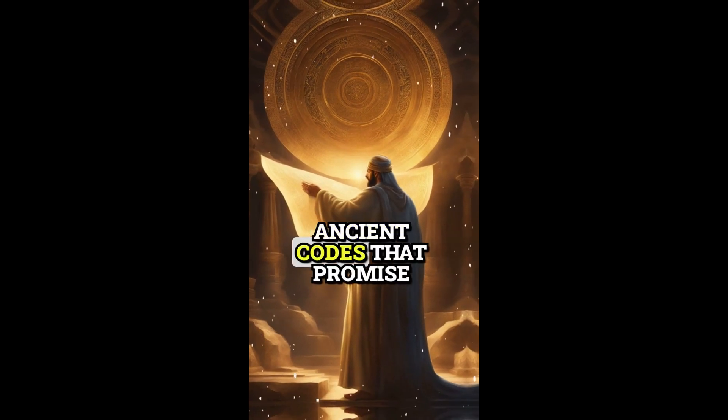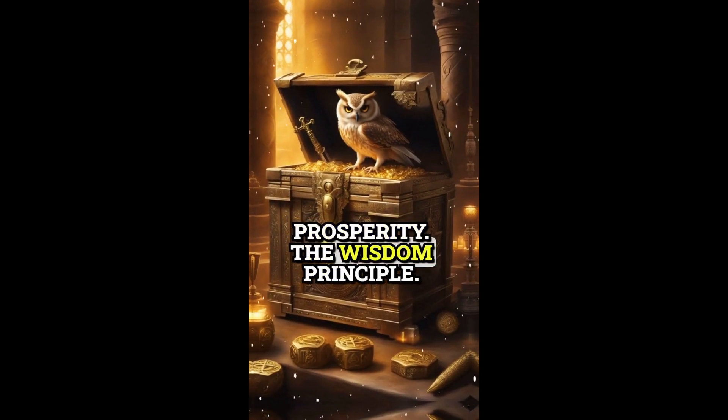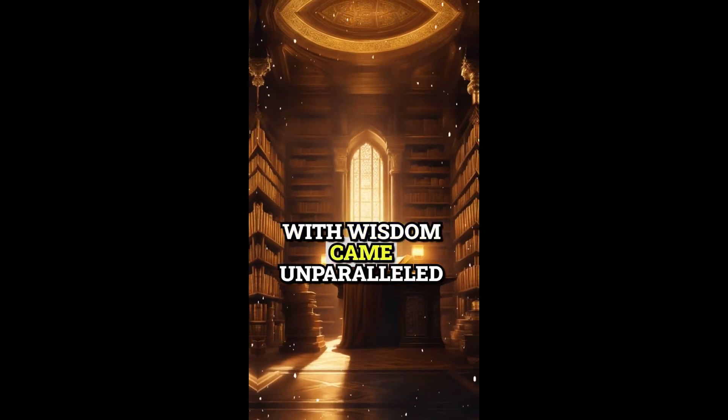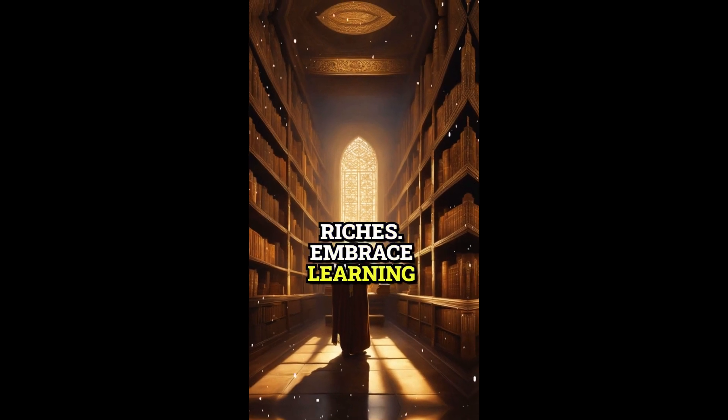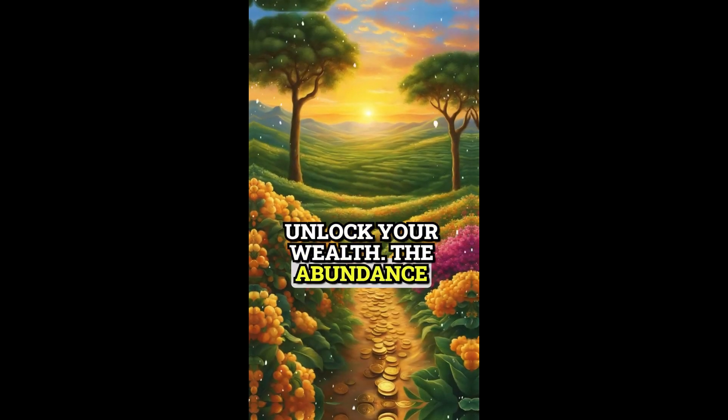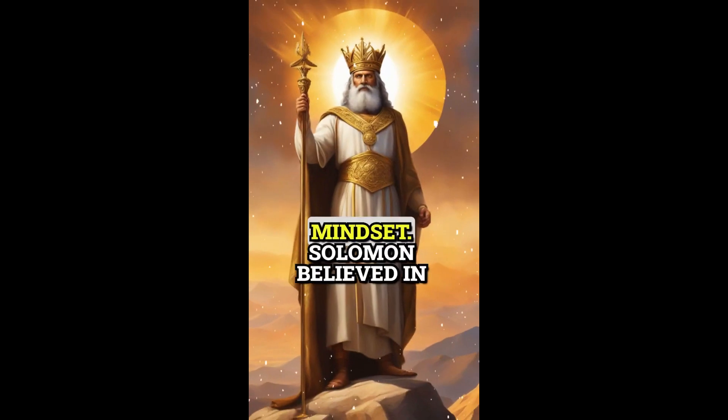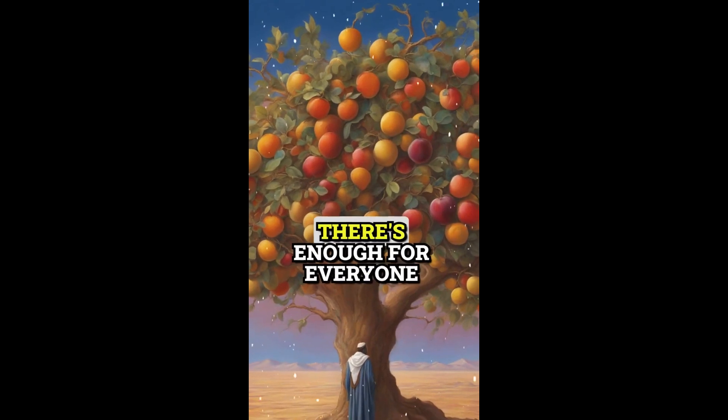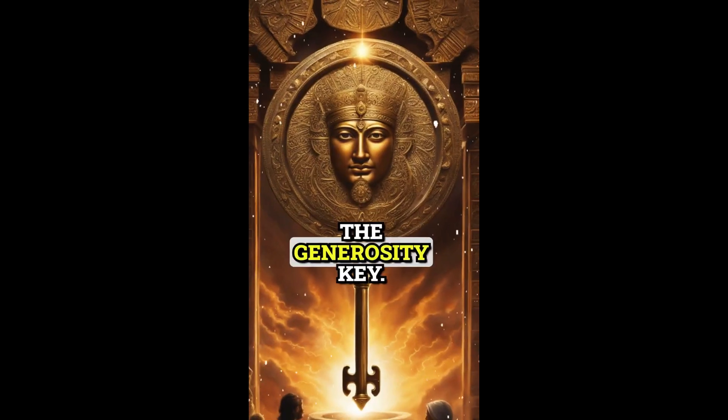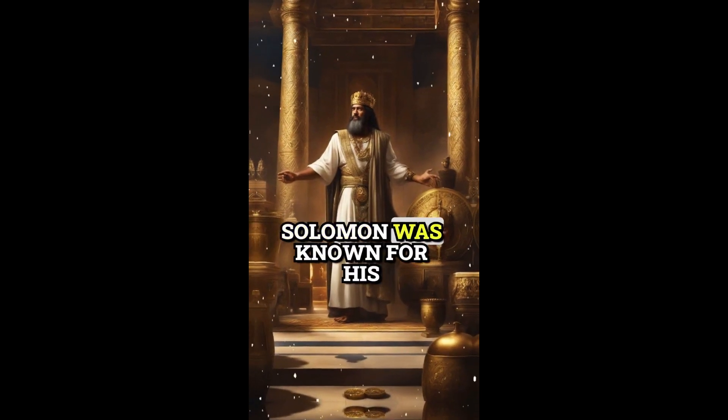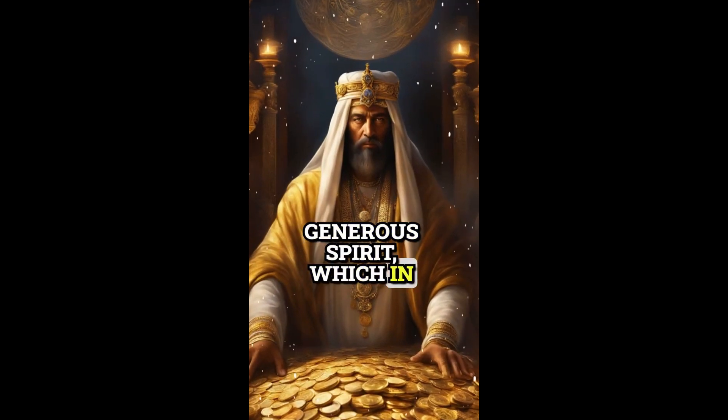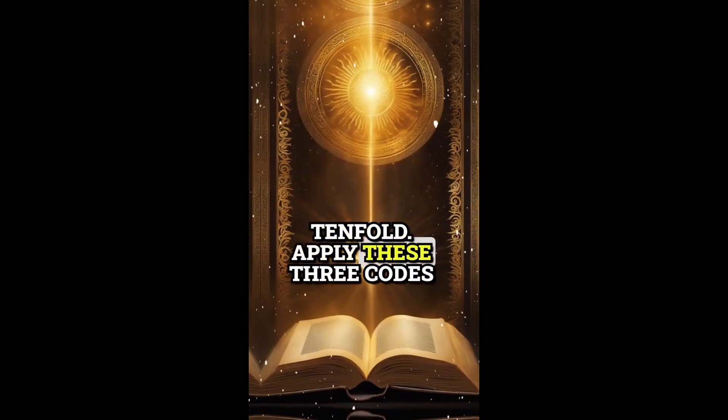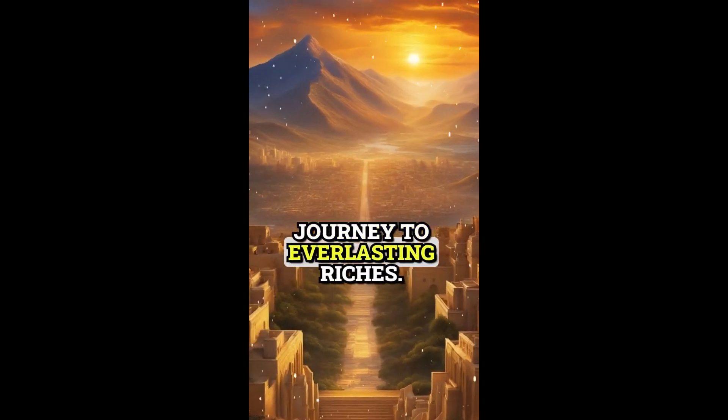We're revealing three ancient codes that promise prosperity. The Wisdom Principle. First up, the Wisdom Principle. Solomon didn't just ask for wealth, he sought wisdom. And with wisdom came unparalleled riches. Embrace learning and decision-making to unlock your wealth. The Abundance Mindset. Next, the Abundance Mindset. Solomon believed in limitless resources. Shift your mindset from scarcity to abundance. There's enough for everyone, and your share is waiting. The Generosity Key. Lastly, the Generosity Key. Solomon was known for his generous spirit, which in turn attracted more wealth. Be generous and watch the universe pay it back tenfold. Apply these three codes in your life and start your journey to everlasting riches.